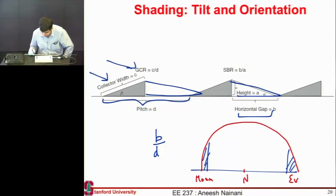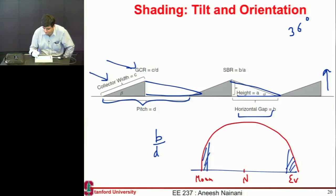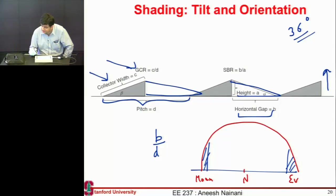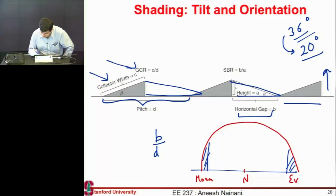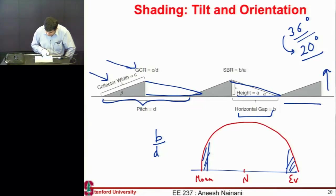That determines how closely you can place panels. Also, the optimal tilt angle should equal the latitude — for the Bay Area, with a latitude of about 36 degrees, that's your ideal tilt. But in practice, panels are usually installed at a lower tilt. One reason is to cause less shading, and another is to maximize output during summer months when light intensity is higher. For both reasons, panels are typically installed at an angle much lower than the local latitude.